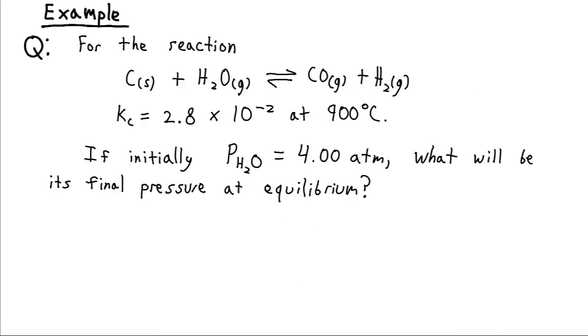So, as an example, let's say we have this reaction here, where solid carbon reacts with water vapor to produce carbon monoxide and H2 gas. We have an equilibrium constant of 2.8 times 10 to the minus 2 at the temperature this reaction is performed at, of 900 degrees Celsius. And in our vessel that we have, we'll inject 4 atmospheres of water vapor. And now our question is, if we wait a really long time, what's going to be the final pressure of the water vapor?